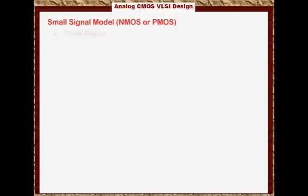The first one is in the triode region. Remember that if the transistor is on using DC voltages, and there is a small signal superimposed on that DC signal, then we can separate the DC signal from the AC signal, and the transistor will have an equivalent circuit for the DC signal. This equivalent circuit is basically an approximation, and to get an accurate model, you have to rely on computer simulation. This equivalent circuit will have two regions.